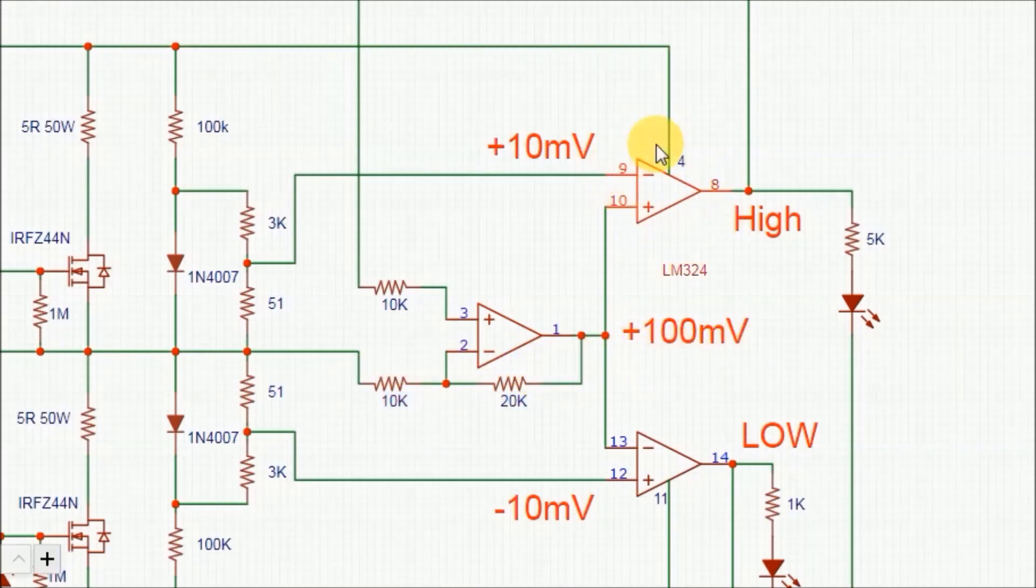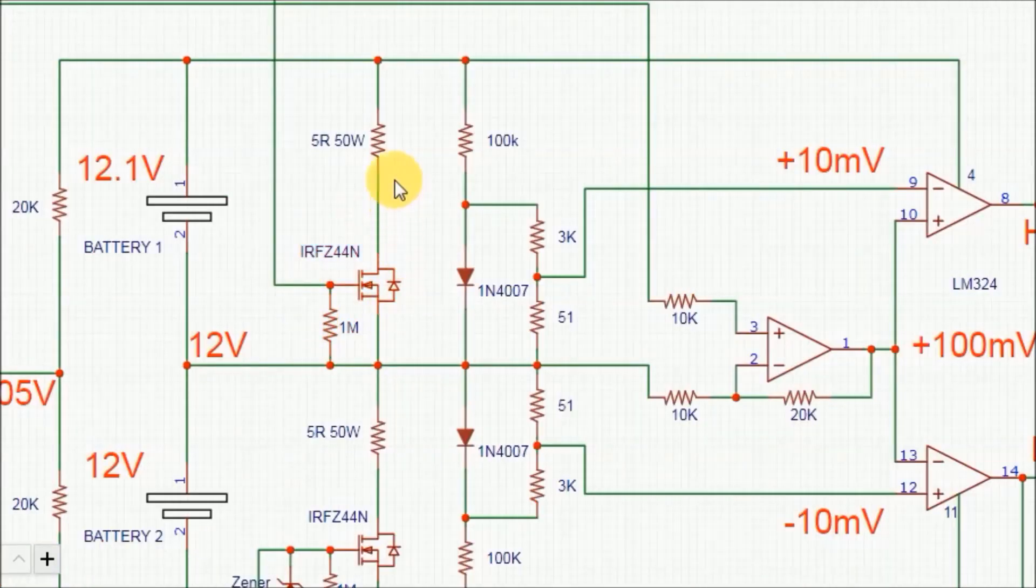This time the output of this op-amp will be high because the voltage of the non-inverting input is higher than the voltage of the inverting input. So it switches on this MOSFET and starts discharging this battery that has higher voltage. It stays discharging until the voltage of both batteries become exactly the same.